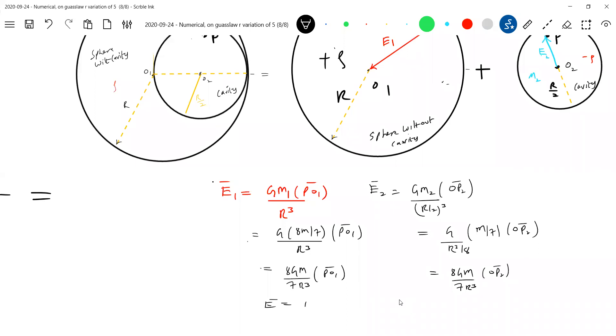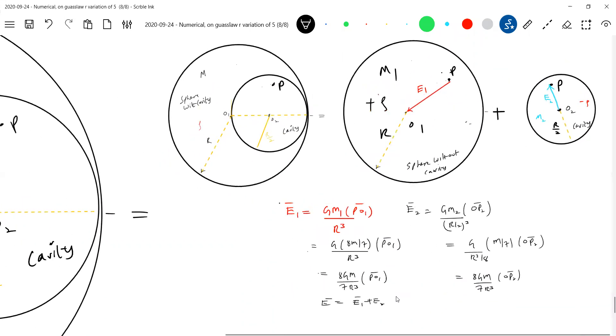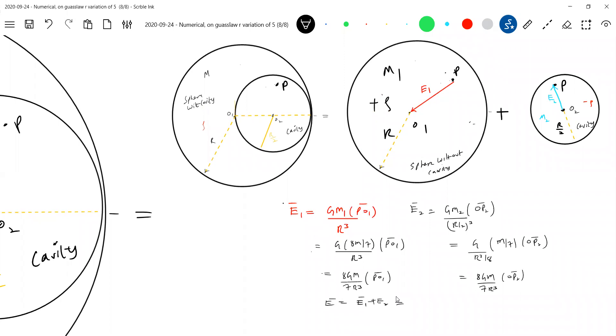What is the resultant field? The vector sum of these two. E1 bar plus E2 bar. 8GM by 7R cubed will come outside. PO1 bar plus OP2 bar. O2P bar. So something like O1P. So this is what I got.